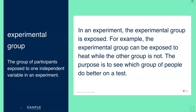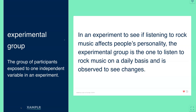In an experiment, the experimental group is exposed. For example, the experimental group can be exposed to heat while the other group is not. The purpose is to see which group of people do better on a test, so you would give some sort of test and measure the difference between the experimental and control group.